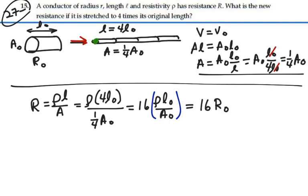And the new resistance, hence, is going to be sixteen times the old resistance, because we've extruded to a smaller radius and a longer path.